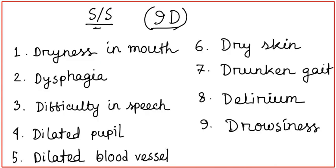What will be the signs and symptoms for these actions? The signs and symptoms can be commonly memorized as 9D. They are dryness in the mouth and throat, dysphagia, difficulty in speech, dilated pupil,